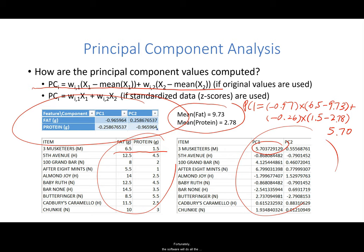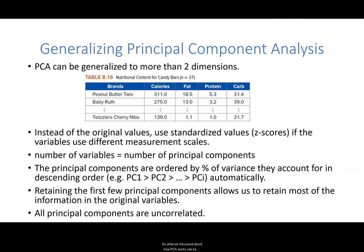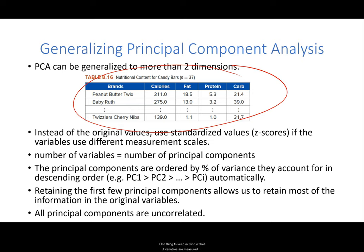Fortunately, the software will do all the calculations, as shown in the software demonstration later. What we discussed about how PCA works can be generalized to more than two dimensions. We can apply PCA to the entire candy bar dataset with four variables: calories, fat, protein, and carb. One thing to keep in mind is that if variables are measured using different scales, variables with larger scales tend to have an oversized influence on the principal component scores. Therefore, it is recommended that variables be standardized prior to PCA.